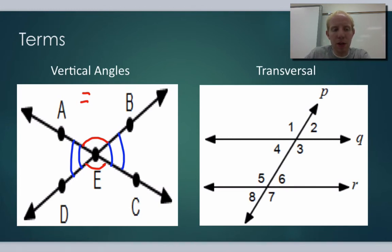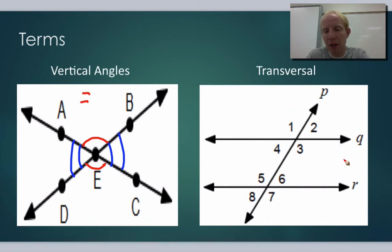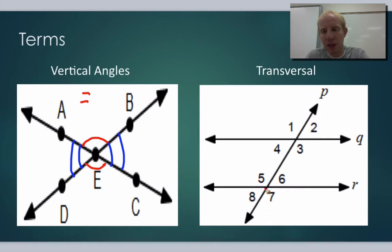More terms we want to know: a transversal is when we have two parallel lines. Q and R in this case are parallel — they're never going to intersect. Then we have P, which we call the transversal. A transversal goes across two parallel lines — it transverses them. So we would say that P is the transversal of Q and R.